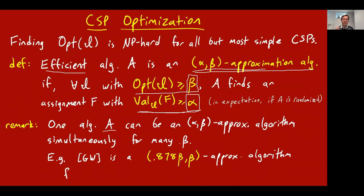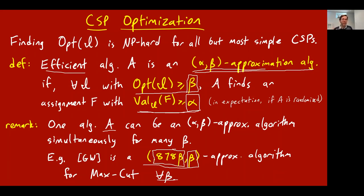What we proved in the first part of this lecture is that the Goemans-Williamson algorithm for max cut is a 0.878-beta comma beta approximation algorithm for every beta. Whatever the best value is — beta — the Goemans-Williamson algorithm is guaranteed to get you at least 0.878 times beta. A 0.878 ratio approximation algorithm means it's 0.878-beta comma beta for every beta. But it can be interesting to look at guarantees not just of this ratio type.